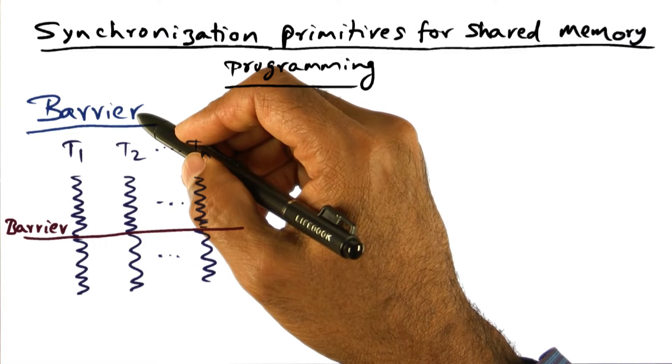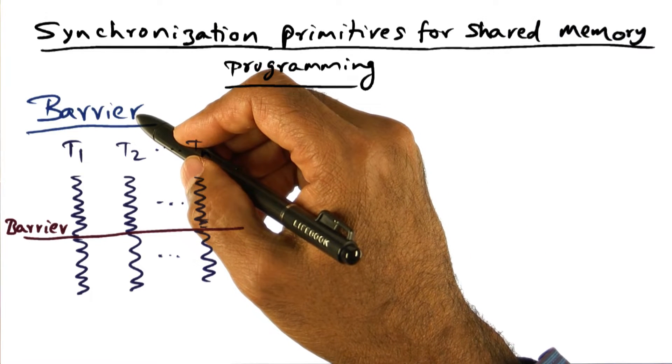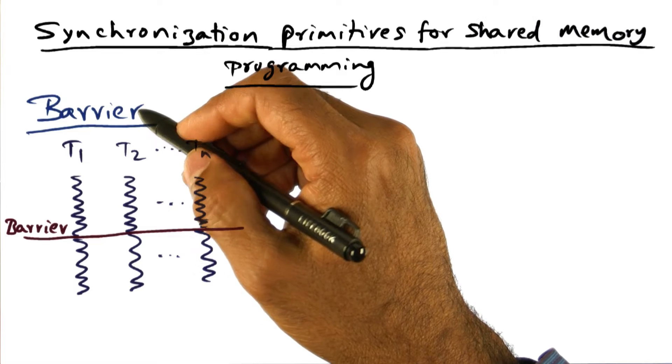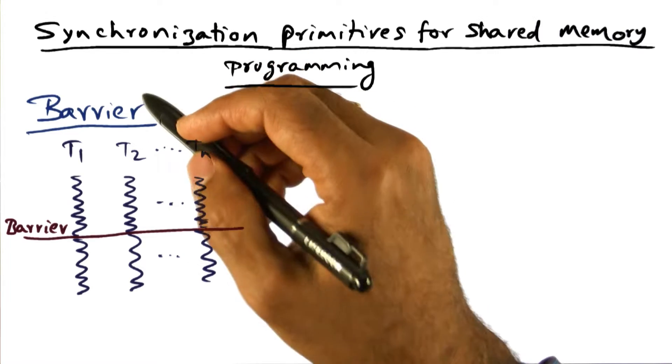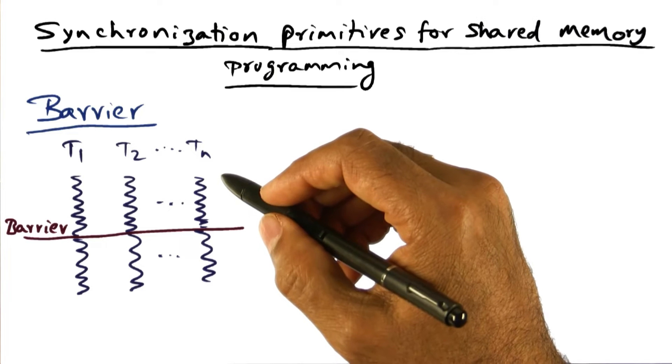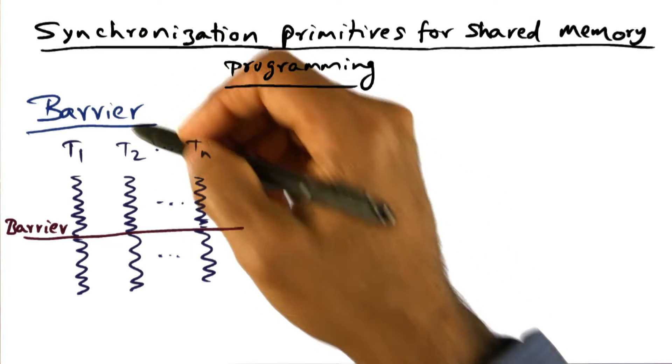Another kind of synchronization primitive that is very popular in multithreaded parallel programs and extremely useful in developing applications, especially in the scientific domain, is what is called a barrier synchronization.